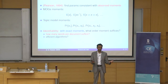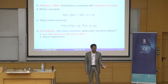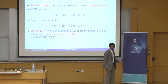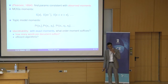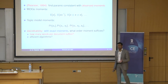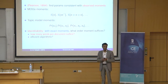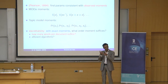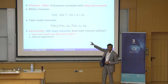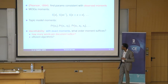So you see a bunch of data, measure a bunch of averages, and ask: what parameters in my model are consistent with the averages I see? This is sometimes called the inverse moment problem, studied quite a bit in mathematics. In our setting, it's a pretty natural question. For the mixture of Gaussians, the first moment is just the mean, the second moment tells us how the data vary jointly — it's a matrix — and the third moment is a tensor of size d cubed, telling us how data vary in three directions simultaneously.